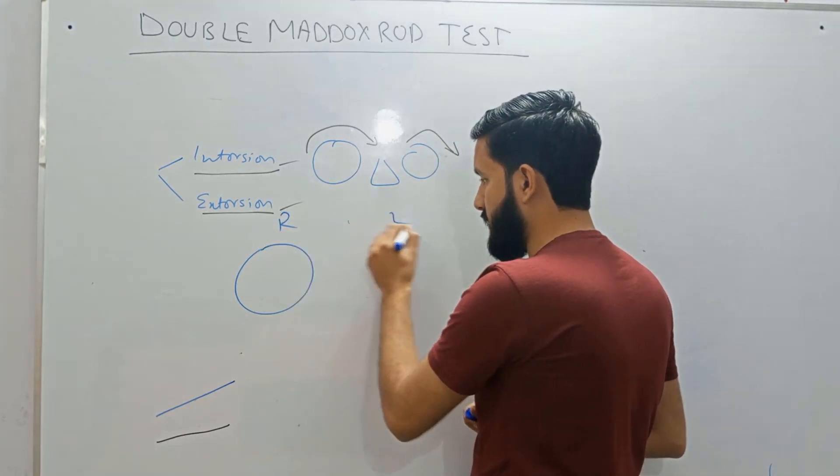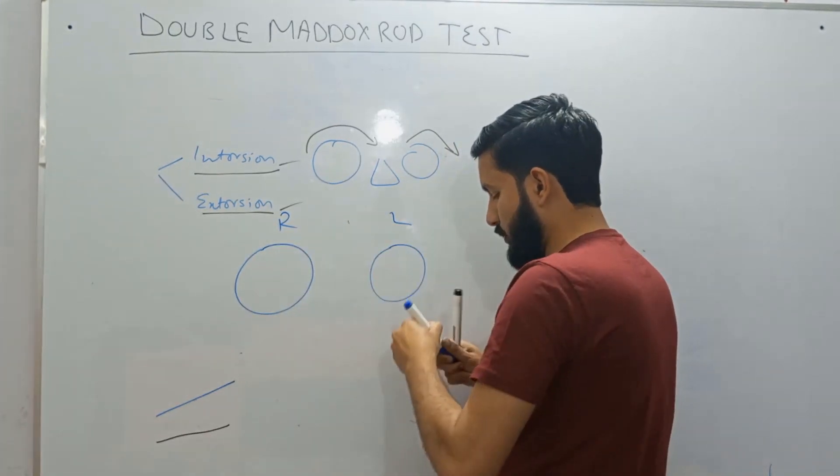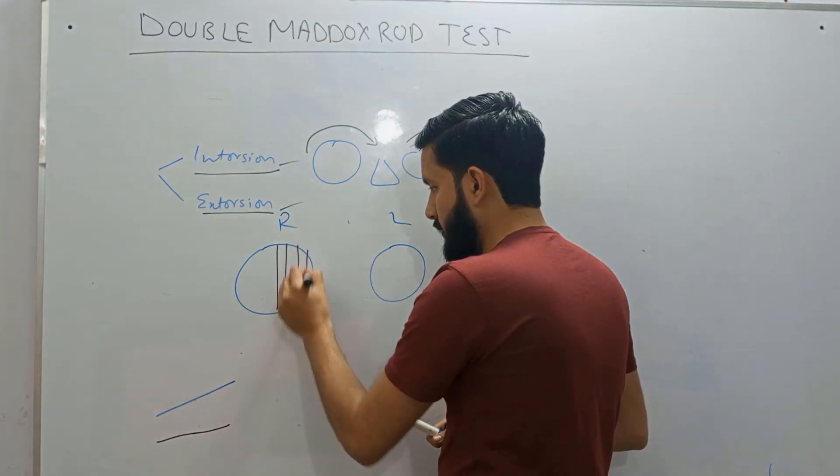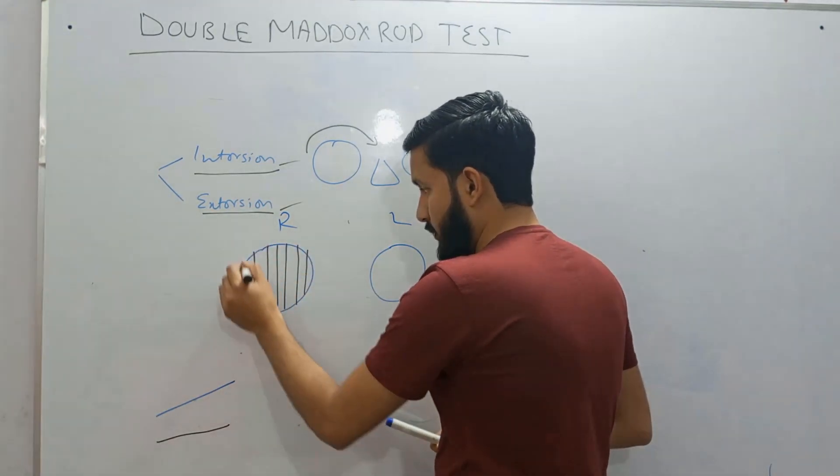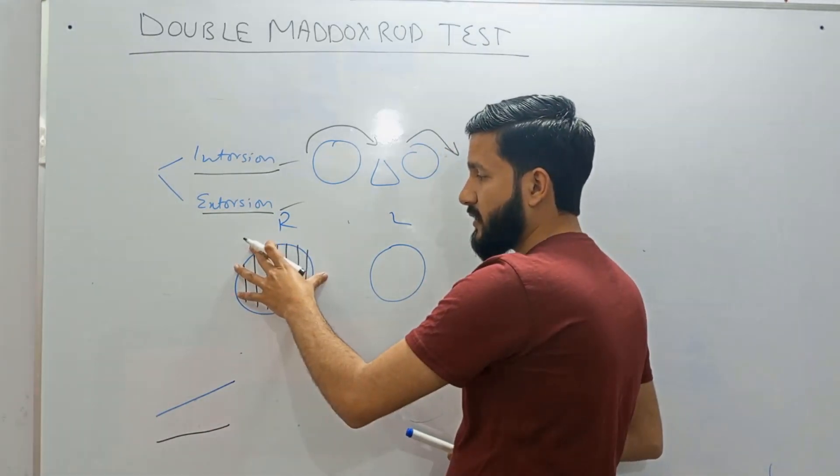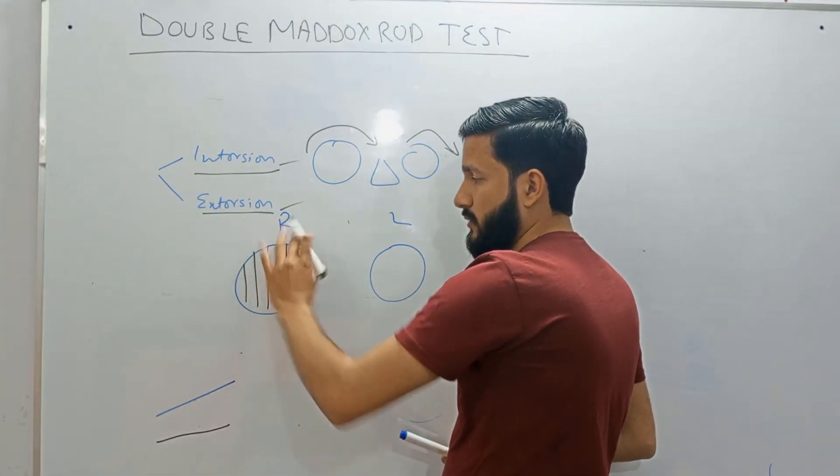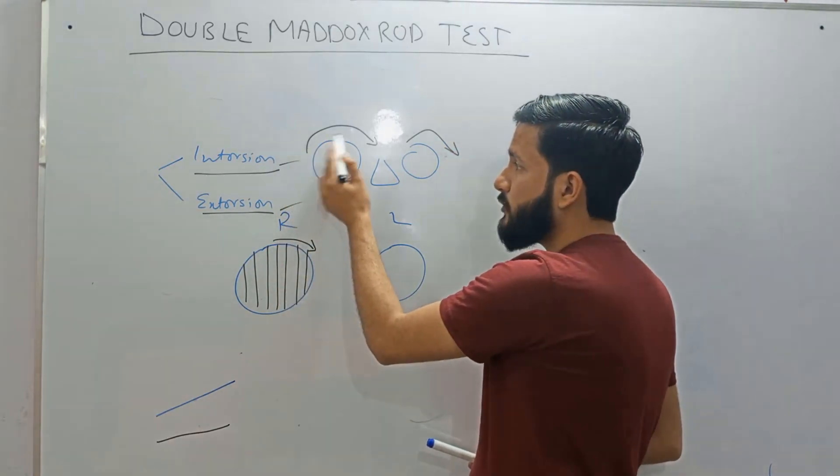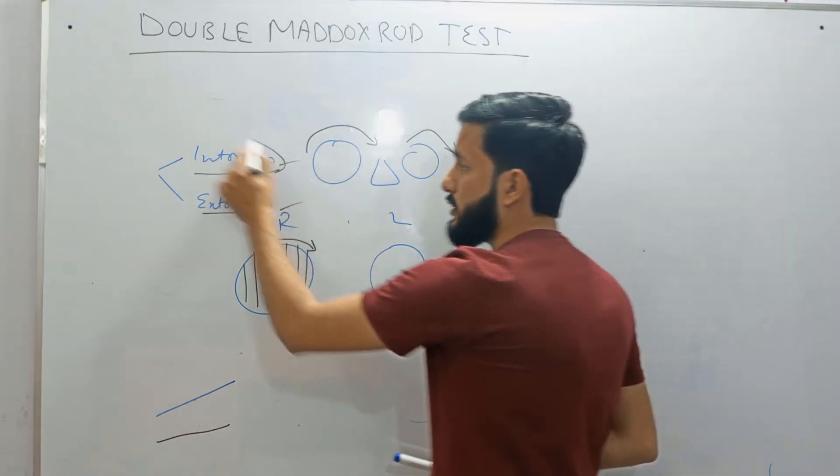Let's suppose this is his right eye and this is left eye. So we have arranged it in a vertical fashion. If the patient rotates the Maddox rod in this direction, like that, then we know that when the eye moves inward and upward it is intorsion.